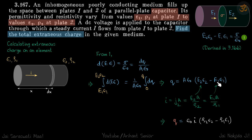Substituting these values, our final answer is: Q = ε₀·I·(ρ₂ε₂ − ρ₁ε₁).